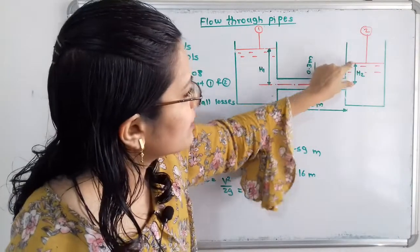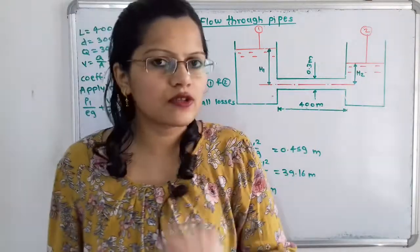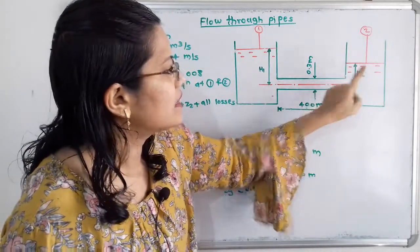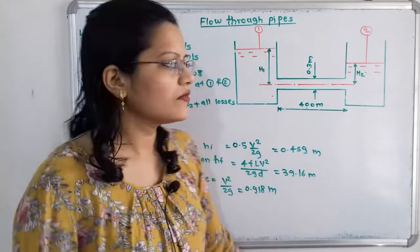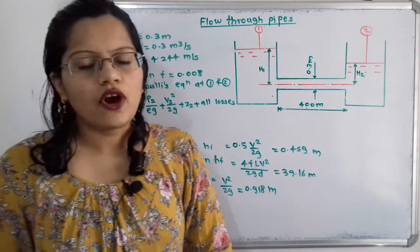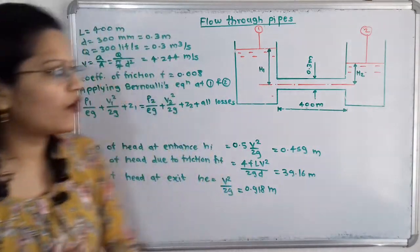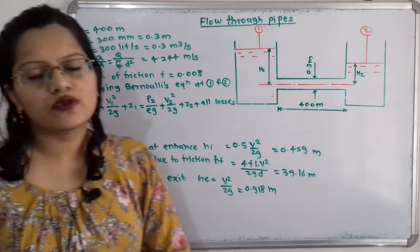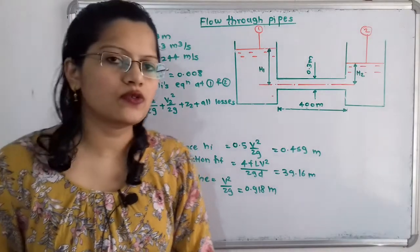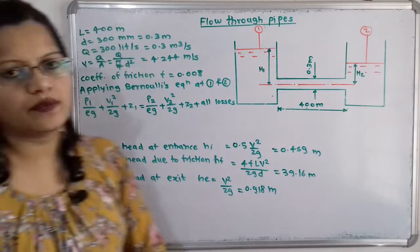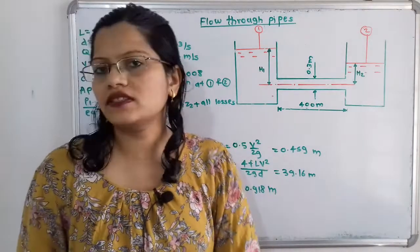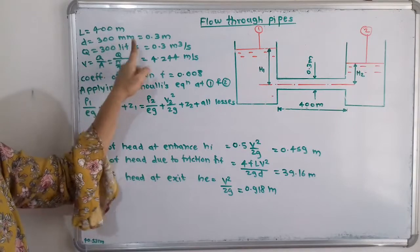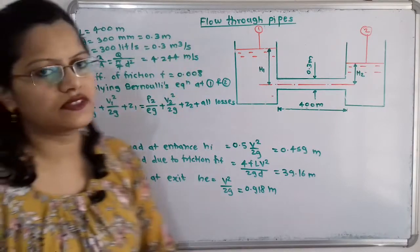We show the head of water in the first tank as H1, measured from the center of the pipe to the free surface. In the second tank, due to head loss, the water level is lower, shown as H2. The rate of flow Q is also given: Q equals 300 liters per second, which in standard units is 300 × 10⁻³ = 0.3 m³/s.